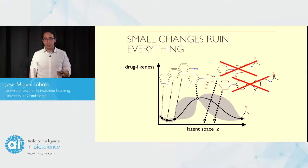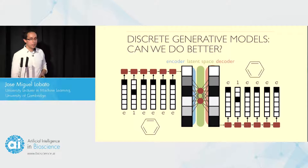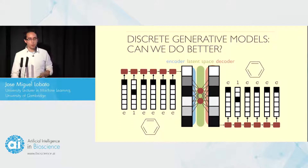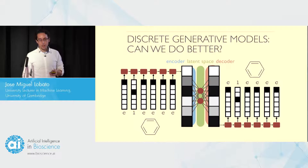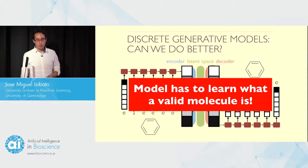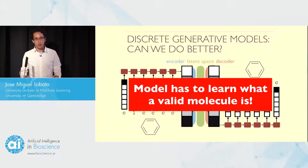What is the problem here? The problem is that our model has to both learn the patterns and regularities present in the data — for example, the regularities found in real-world molecules — but it also has to learn the constraints that define valid molecules in practice. The model has to learn what a valid molecule is, which requires significant amounts of data. The idea we propose in this work is to try to avoid this by manually introducing into these neural network generative models the constraints that molecules should satisfy.